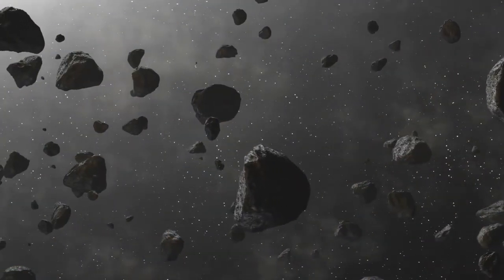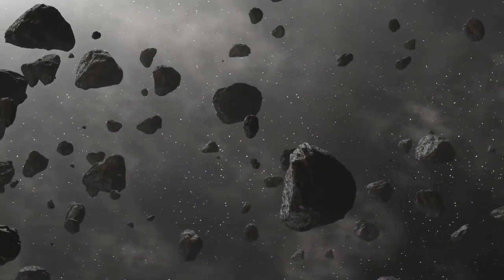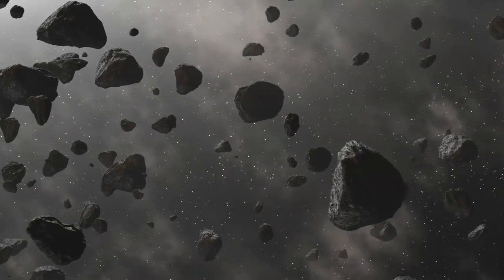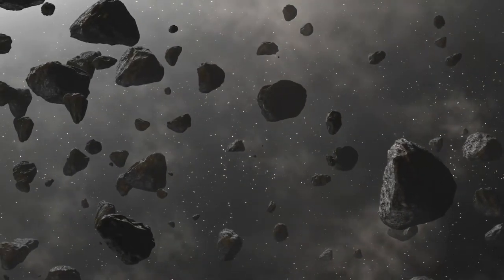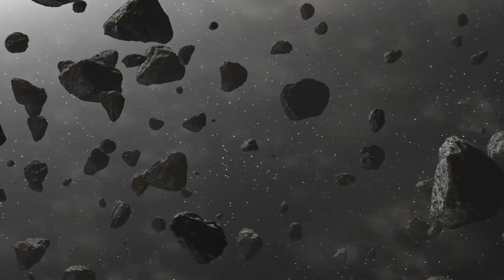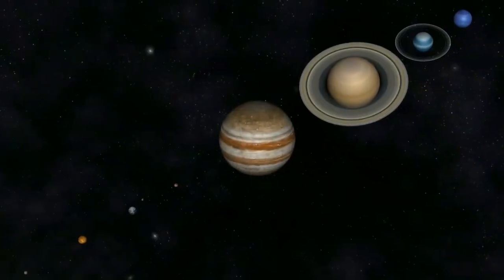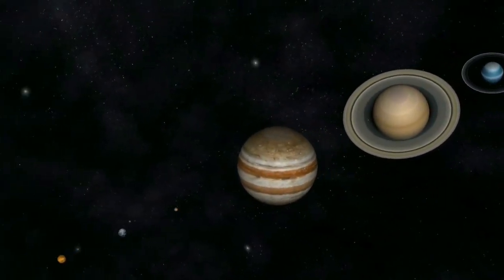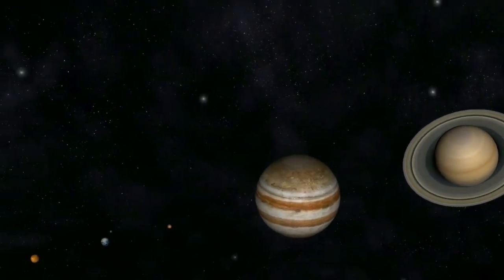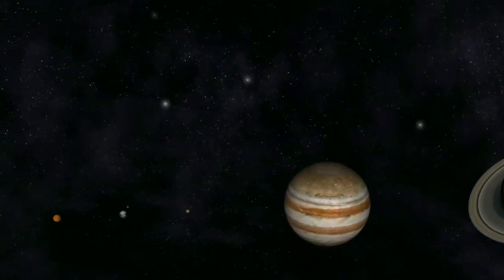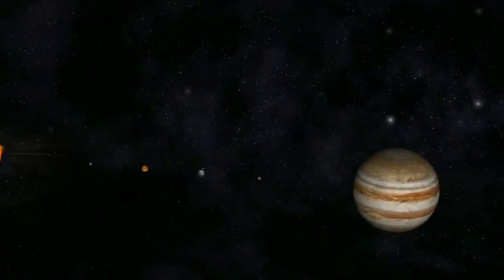Out of all the planets, moons, asteroids, and comets in our solar system, only Earth has liquid water on the surface and is capable of supporting life, at least as far as we know. That's because our planet sits in the habitable zone of our solar system. It's far enough from the sun so that all of our water doesn't boil away, but close enough so that it doesn't freeze.